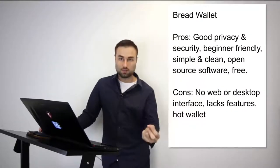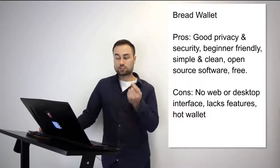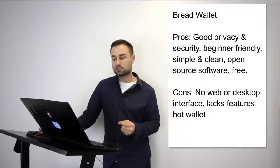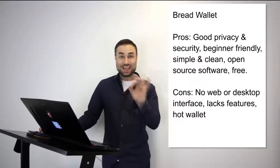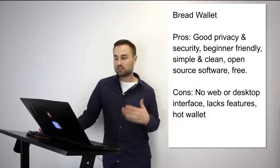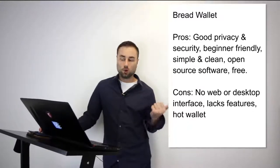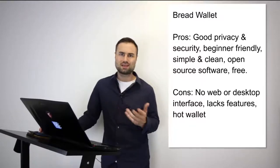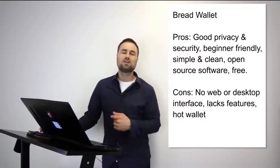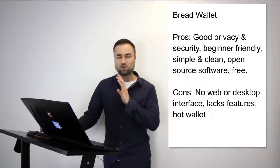The first recommendation is the Bread Wallet. It's a simple wallet — literally made for a beginner because the user interface is so simple. It's specifically just for Bitcoin, no other currencies. The pros: very good privacy, beginner-friendly, open source, free, simple and clean. The cons: no web or desktop interface, lacks features, and it's a hot wallet, so it has less security. But if you're looking for something for day-to-day transactions — maybe keeping around 500 bucks in Bitcoin — and you don't want to overthink it, Bread Wallet is a great start.